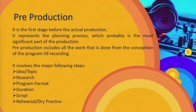The first stage is pre-production. It represents the planning process, which is probably the most significant part of the production. Pre-production includes all the work that is done from the concept of the program till recording. It involves the following major steps.